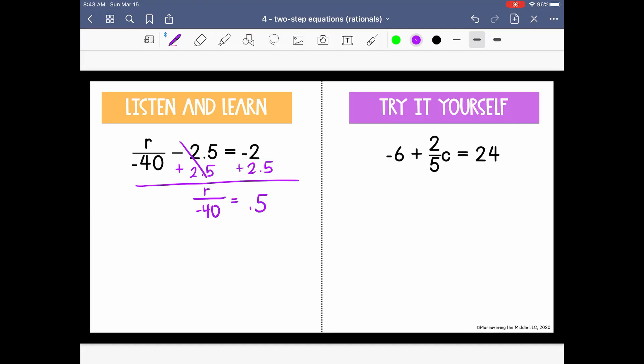r is being divided by negative 40, so let's multiply or do the inverse multiplying by negative 40 on both sides. So here, this will just cancel to 1r. And 5 tenths times negative 40 is negative 20. Okay, pause the video and try the example on the right.